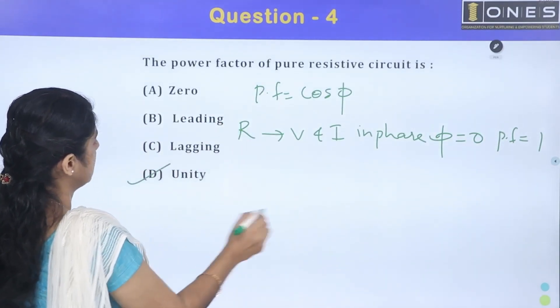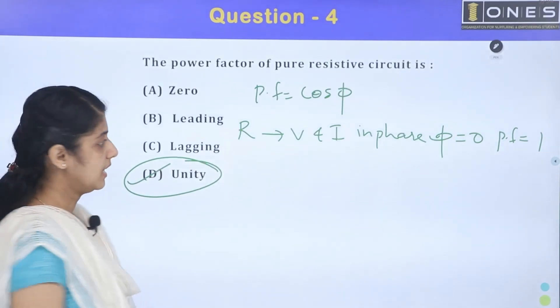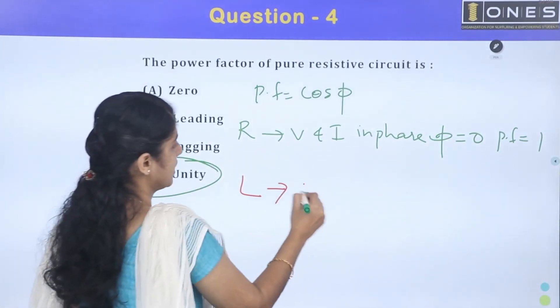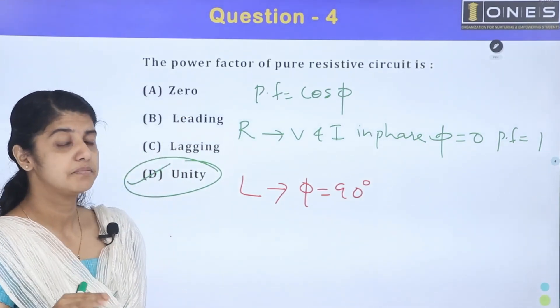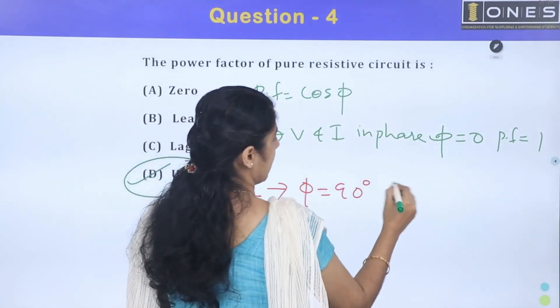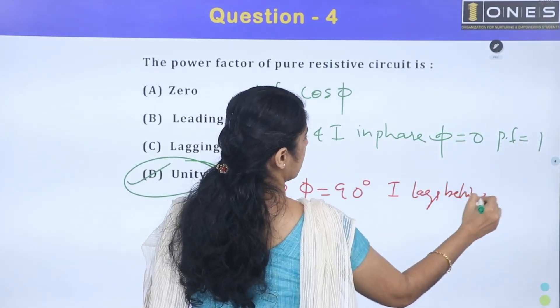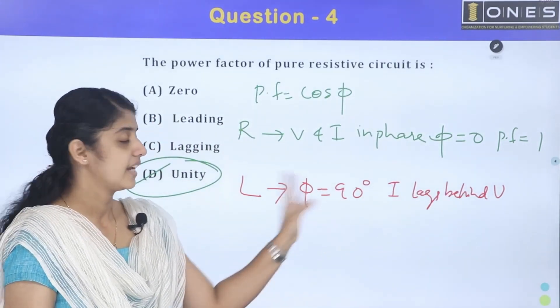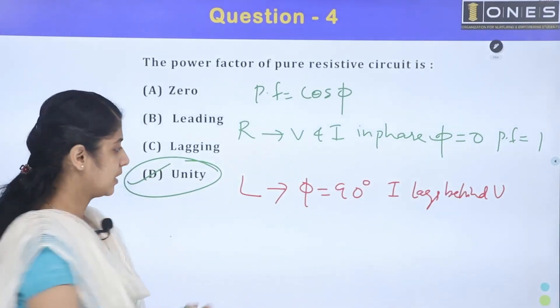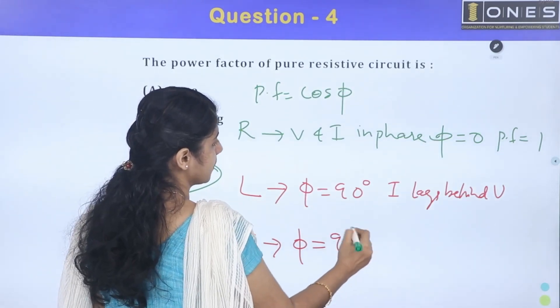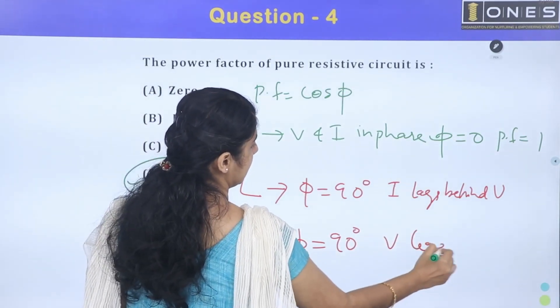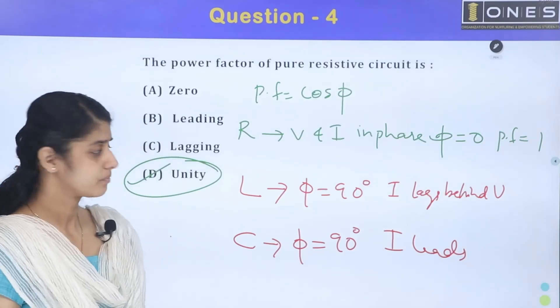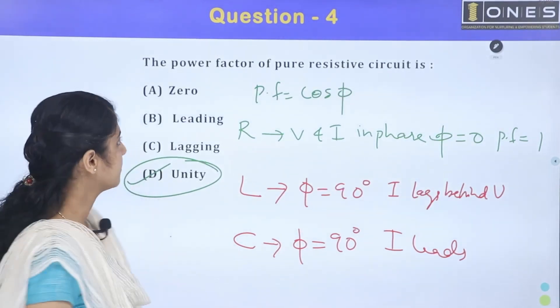In inductive circuit, phi equals 90 degrees. Voltage leads, and current lags behind voltage by angle 90 degrees. This gives lagging power factor. In capacitive circuit, phi is 90 degrees with current leading, giving leading power factor.